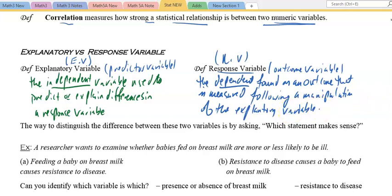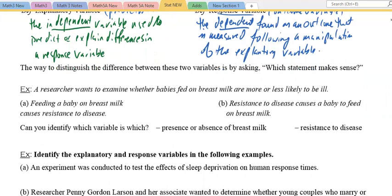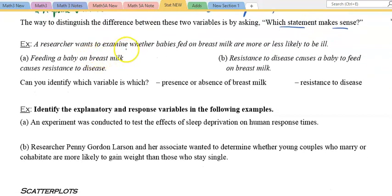This depends on the EV. The way to distinguish the difference between these two variables is by asking which statement makes sense. A researcher wants to examine whether babies fed on breast milk are more or less likely to be ill. A) feeding a baby on breast milk causes resistance to disease, or B) resistance to disease causes a baby to feed on milk. Of course, it's A. Can you identify which variable is which? Presence or absence of milk—that is the EV, and resistance to disease—that's the RV.